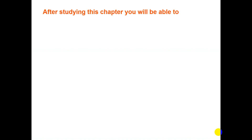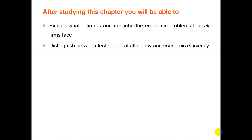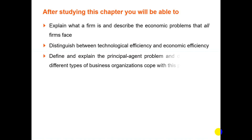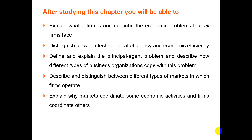After studying this chapter, you will be able to explain what a firm is and describe the economic problems that all firms face. You can also distinguish between technological efficiency and economic efficiency. You can define and explain the principal-agent problem and describe how different types of business organizations cope with this problem. You can describe and distinguish between different types of markets in which firms operate, and explain why markets coordinate some economic activities and firms coordinate others.